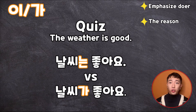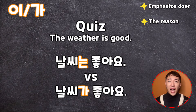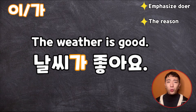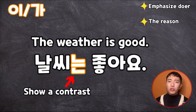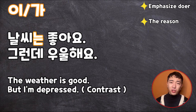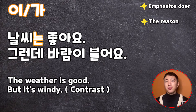Quiz: Choose the right particle. The weather is good — 날씨는 좋아요 vs 날씨가 좋아요. Which one is correct, and why? The answer is 날씨가 좋아요, because 날씨 can't be a general statement — weather is changing all the time. You can say 날씨는 좋아요 too, but in this case, 는 is used to show a contrast. For example: the weather is good, but I'm depressed. The weather is good, but it's windy.